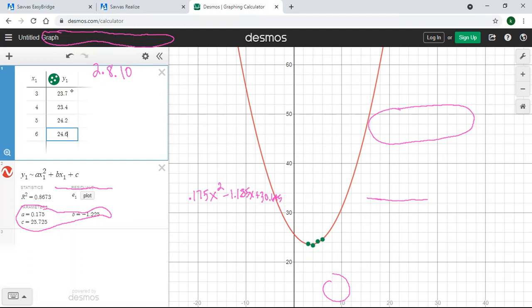Okay, so I've got a different equation here that we have to do. So I've got, still a was 0.175. That's interesting, that didn't change. This b here was negative 1.225 x, and the c 25.725.